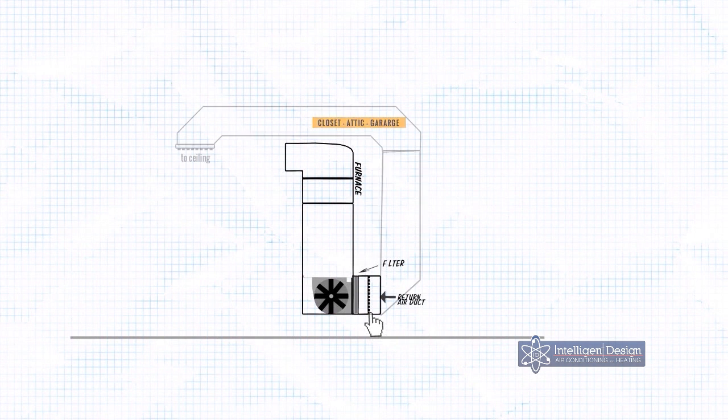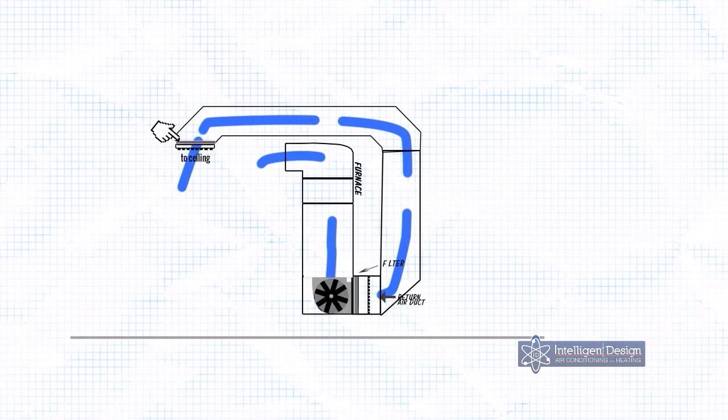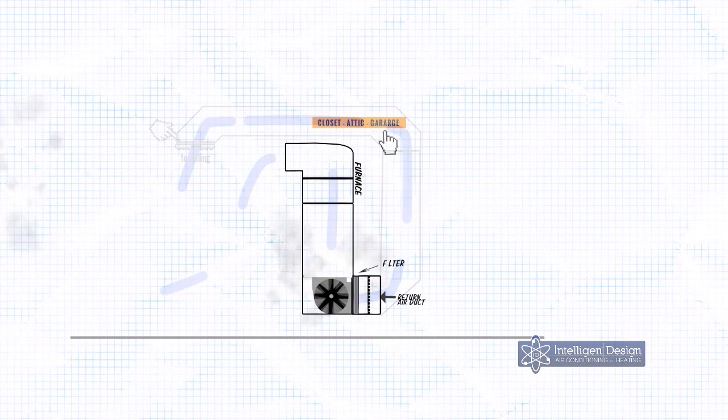If it's in the garage, the furnace or air handler will still sit on a platform, but the intake will be cut into the floor next to the furnace, going up through the attic then into the home, and the grill is typically in the ceiling. For this example, we're going to be showing a garage application.